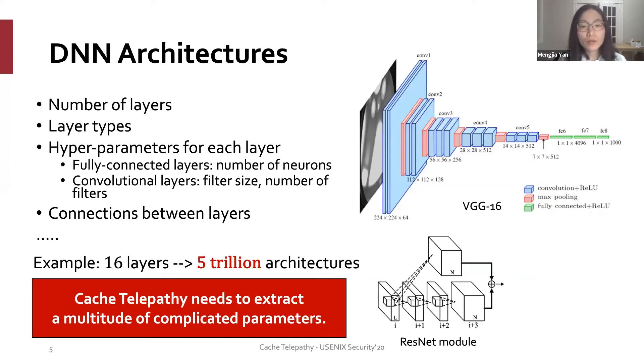Overall, comparing to most of the prior side-channel attacks that extract just the key for crypto algorithm, cache telepathy needs to extract a multitude of complicated parameters.